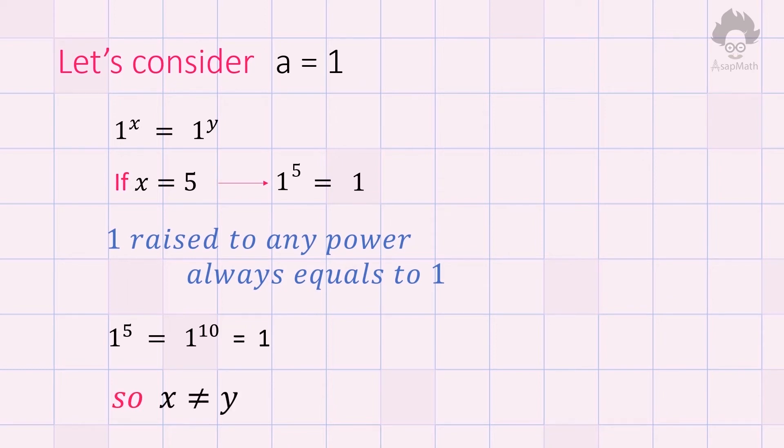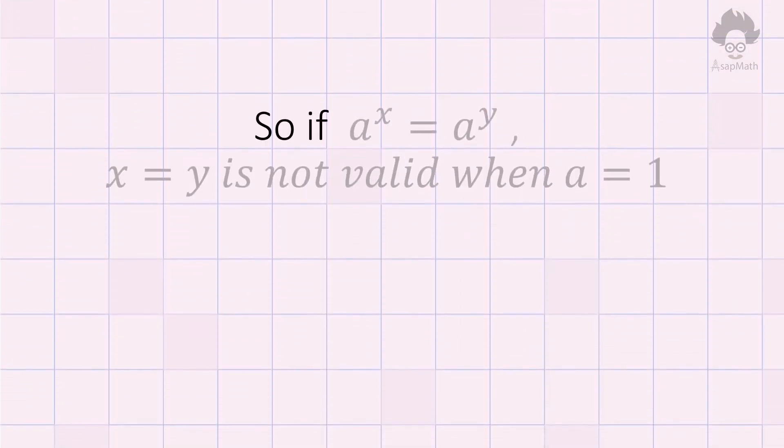Now it's clear that if a to the power x equals a to the power y, then x equals y is not valid when a equals 1. Let's see how we can prove that.